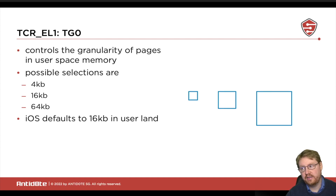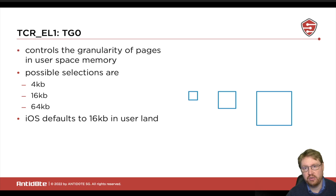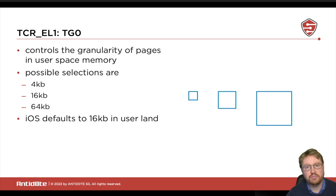The first thing it selects is the TG0 value. This is a flag that controls the granularity of pages in user space — meaning how big a page actually is in user land. The possible selections are 4 kilobytes, 16 kilobytes, or 64 kilobytes, as defined in the ARM hardware spec. When it comes to iOS and macOS, the default is to use 16 kilobyte user land pages — the medium size.